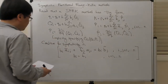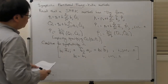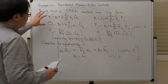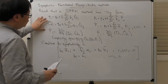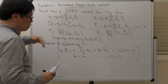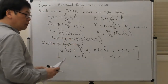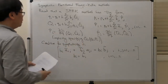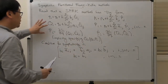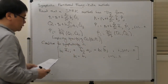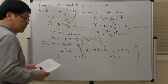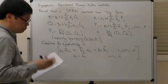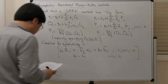Assuming we have a symplectic partitioned Runge-Kutta method whose coefficients satisfy this symplecticity condition, we want to show that the one-step method generated by this can be viewed as the discrete Hamiltonian map for some discrete Lagrangian.